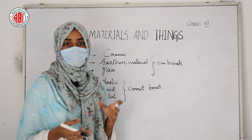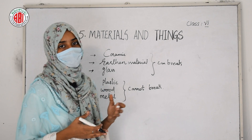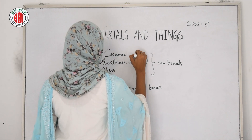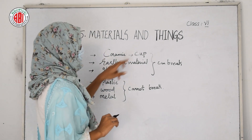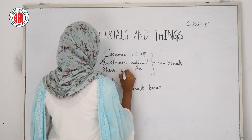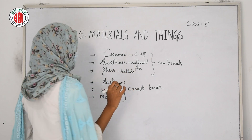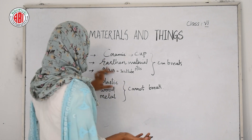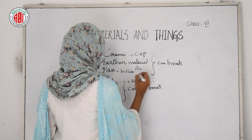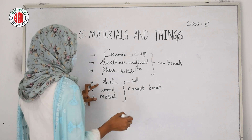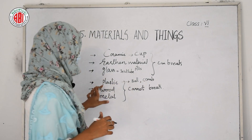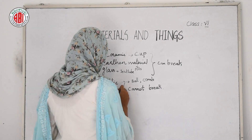Here we'll take examples of things present in our surroundings. Ceramic is a material used to make different things like cups or plates. With earthen material we can make pots. Glass is used to make things like a test tube, which is a chemical apparatus you can see in a chemistry lab. Plastic is used to make things like balls, toys, and combs.